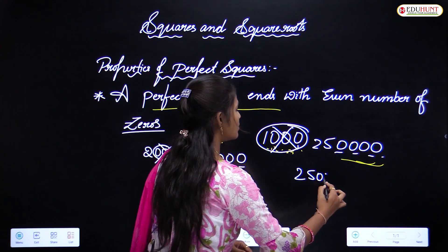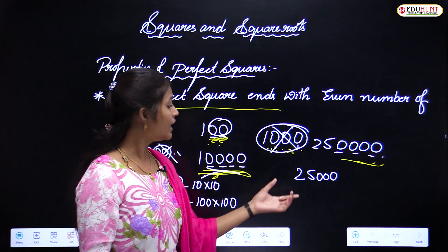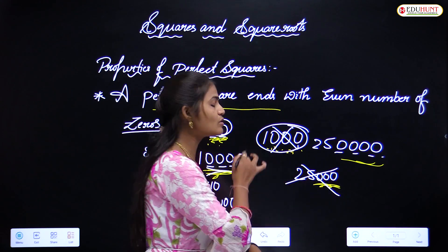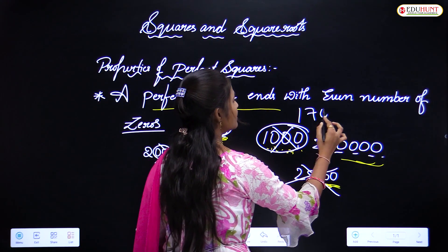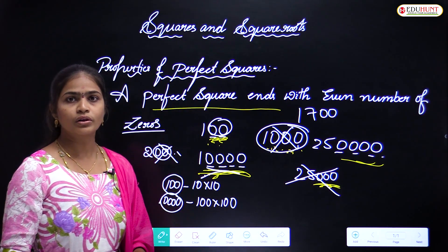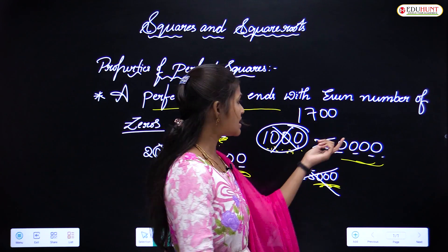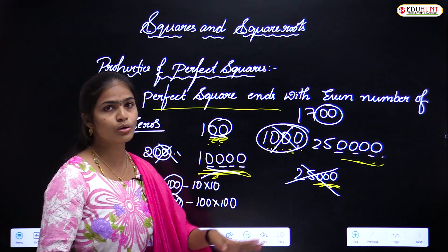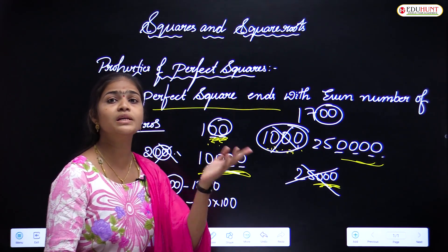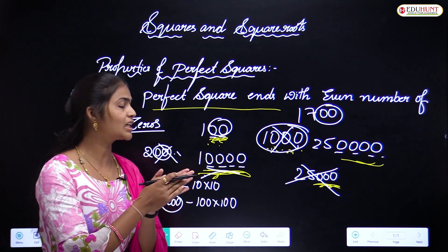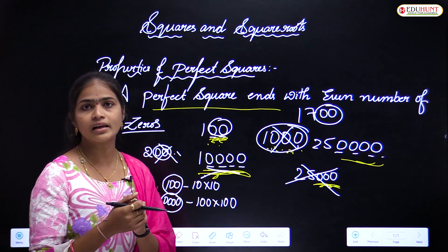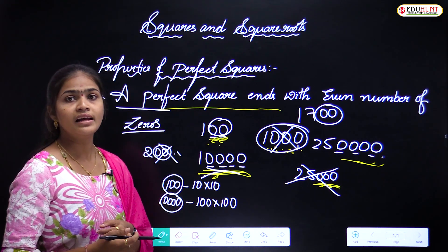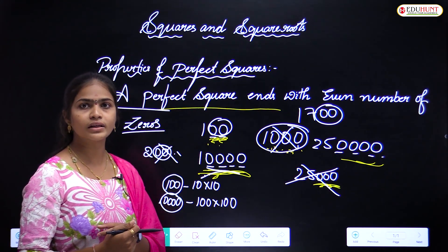So that is the second property: a perfect square ends with an even number of zeros. If a number ends with an odd number of zeros, we can immediately conclude it is not a perfect square. If it ends with an even number of zeros, it may be a perfect square, but we need to confirm using other methods.